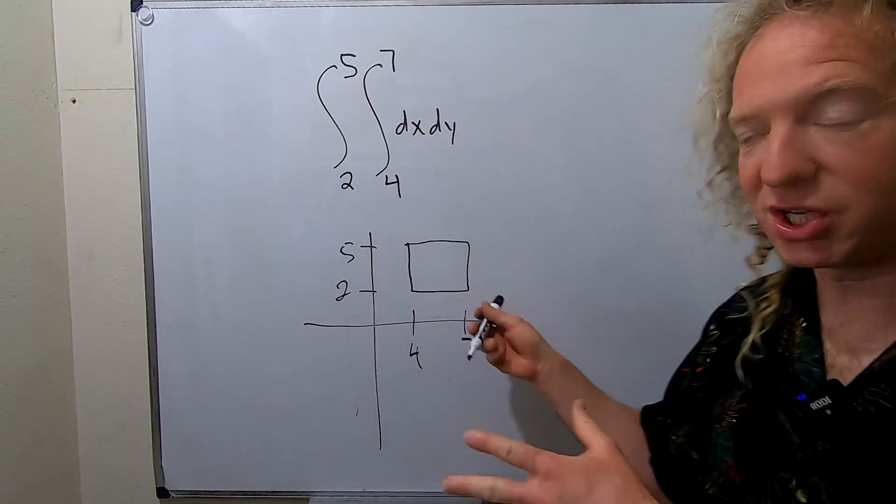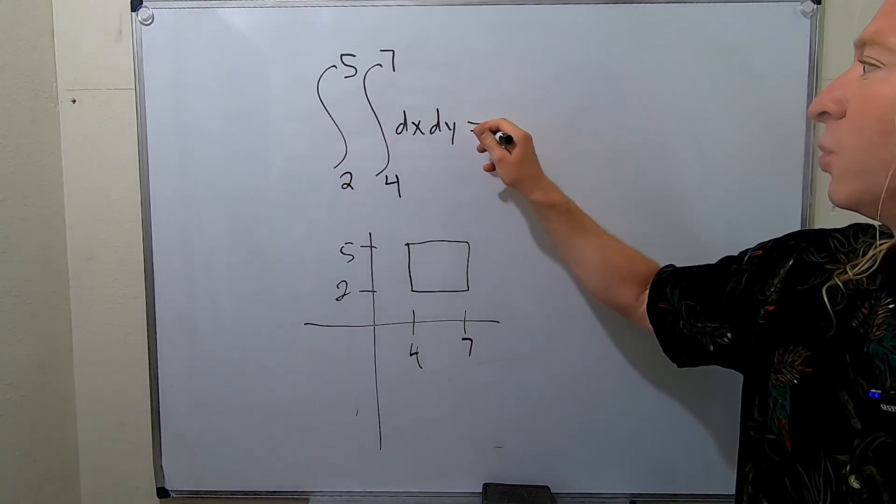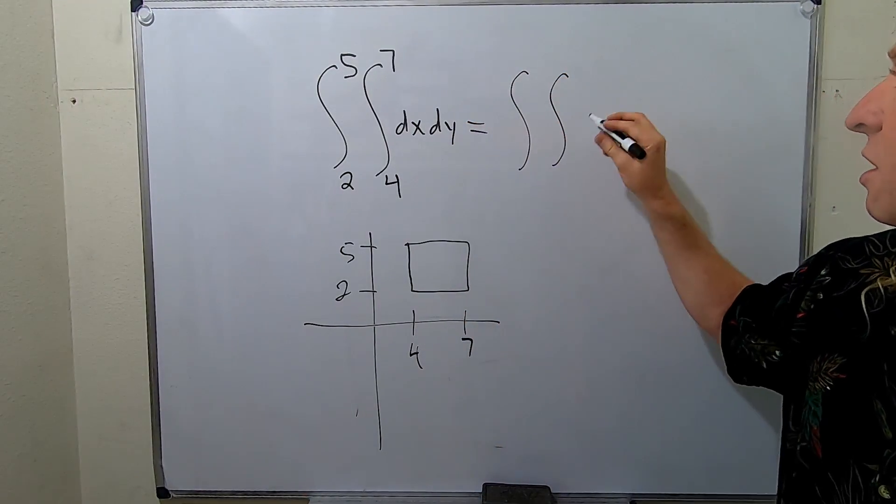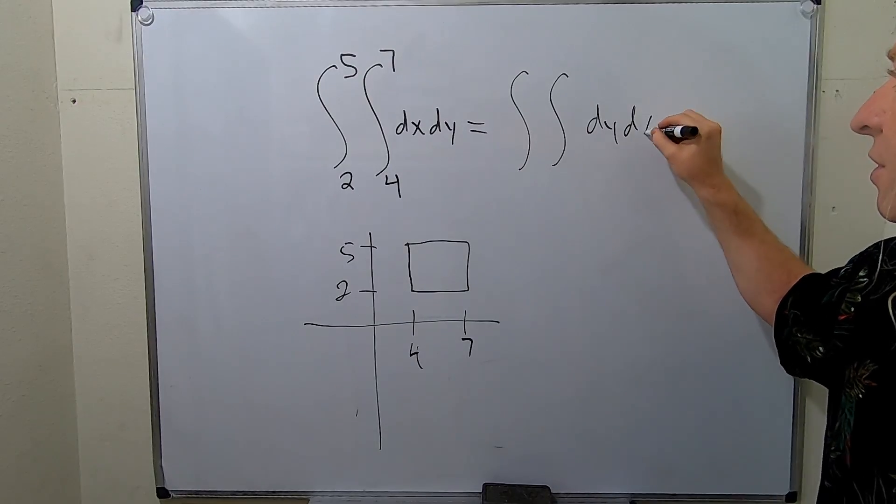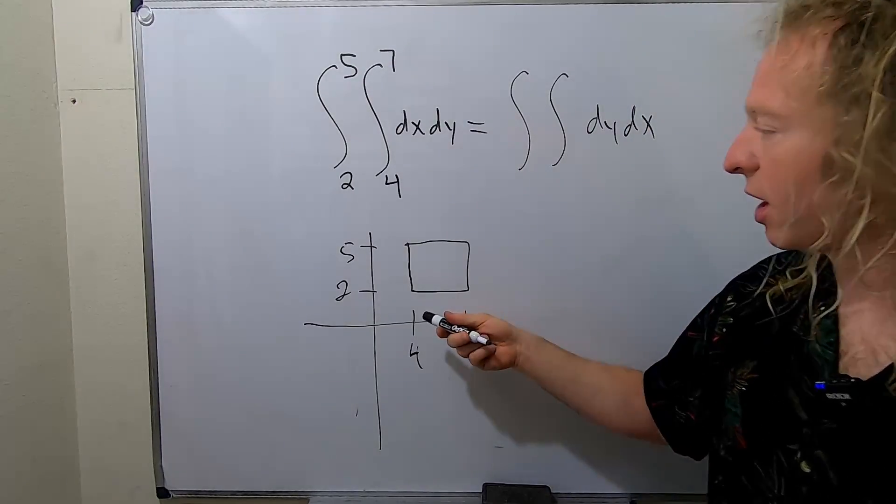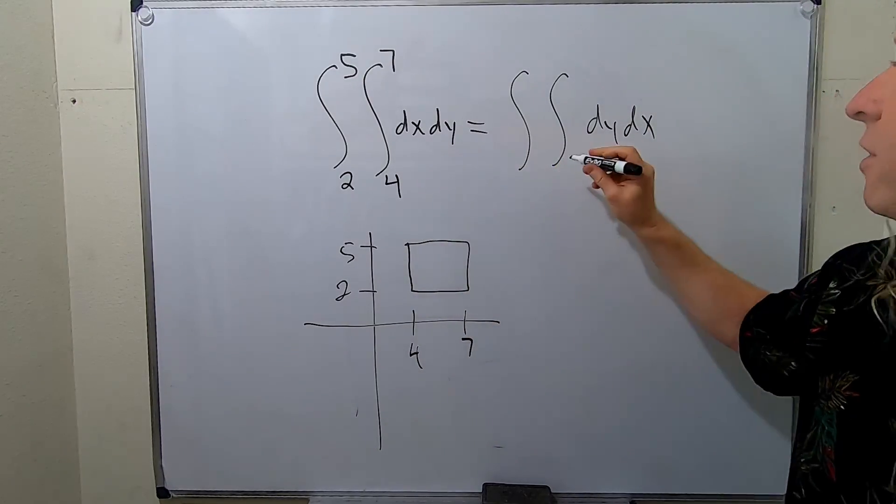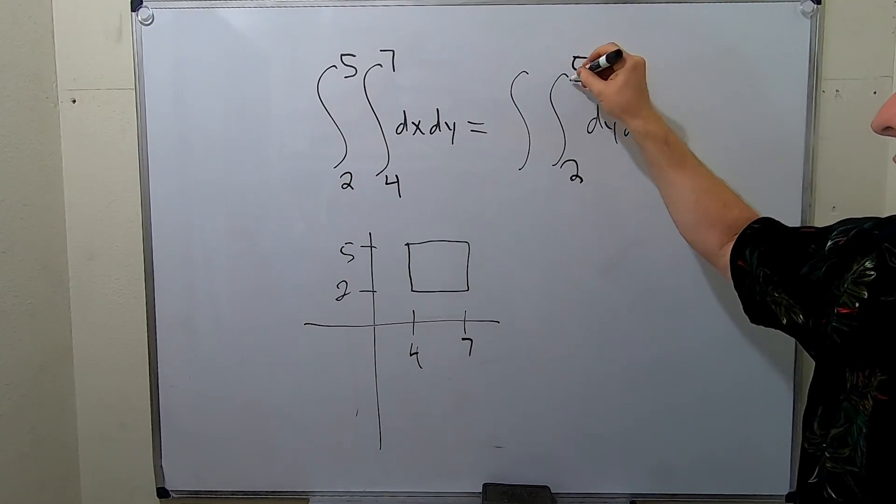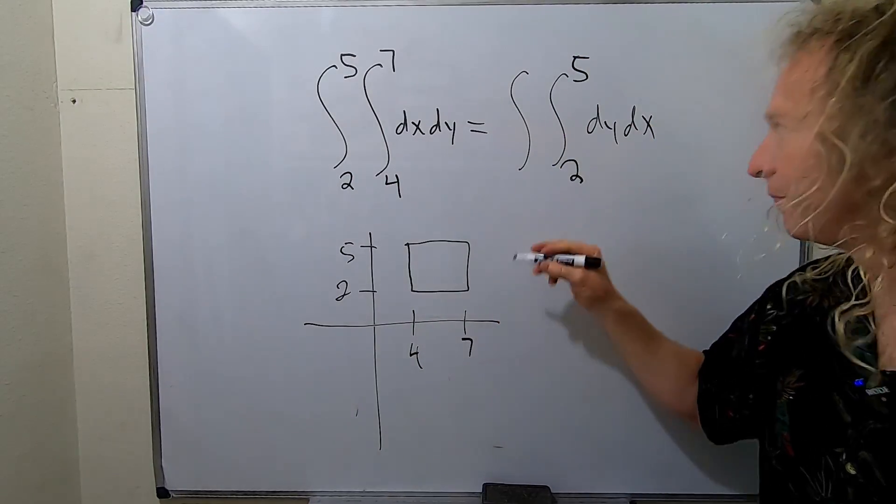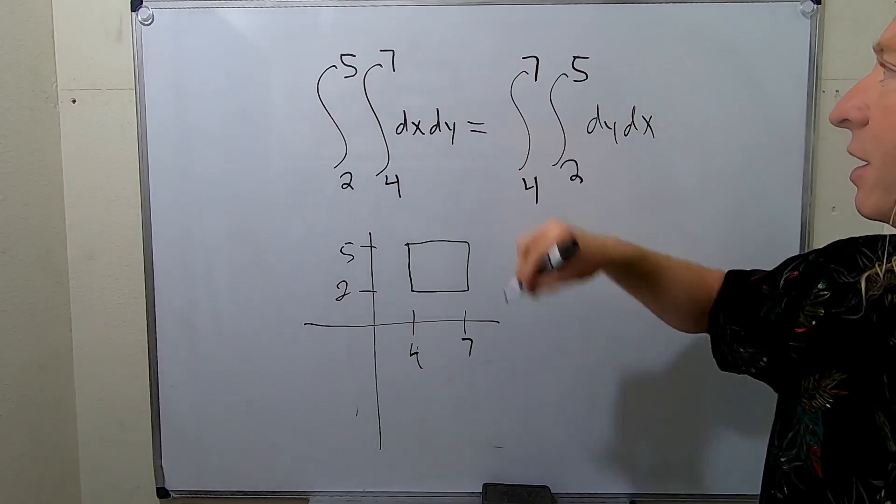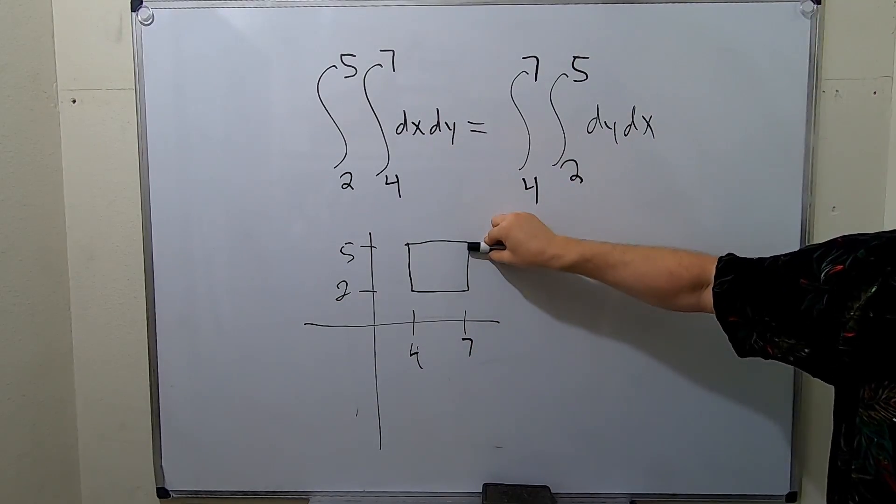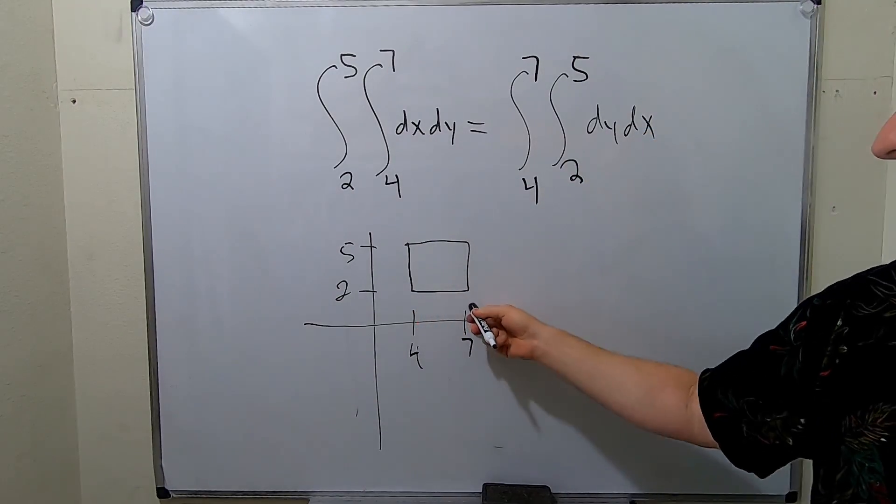Okay, so that's our region of integration. So now we can switch the limits. So now let's do dy dx. So from the picture, first we're doing y. So y goes from 2 to 5. And then x goes from 4 to 7. And that's it. So again, y goes from 2 to 5, x goes from 4 to 7.